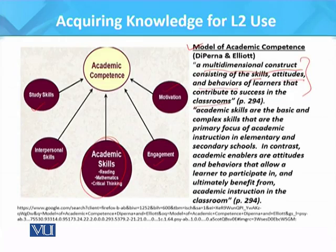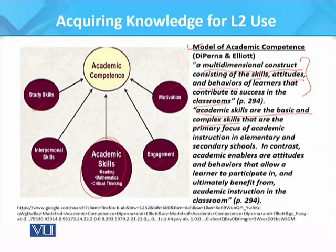It does not only cover the academic skills that need to be covered in the classroom, but also other skills which are contributing factors in the development of those academic skills — attitudes, behaviour, as well as specific skills which as a whole contribute to understanding how academic skills need to be developed. They believe that academic skills are the basic and complex skills that are the primary focus of academic instruction in elementary and secondary school. In contrast, there are academic enablers.